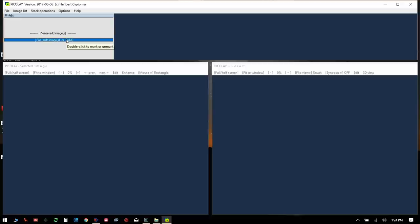The first one is just a file list which we'll add to. This is sort of a preview of the images in the file list. And then this will be the final window of the end result.